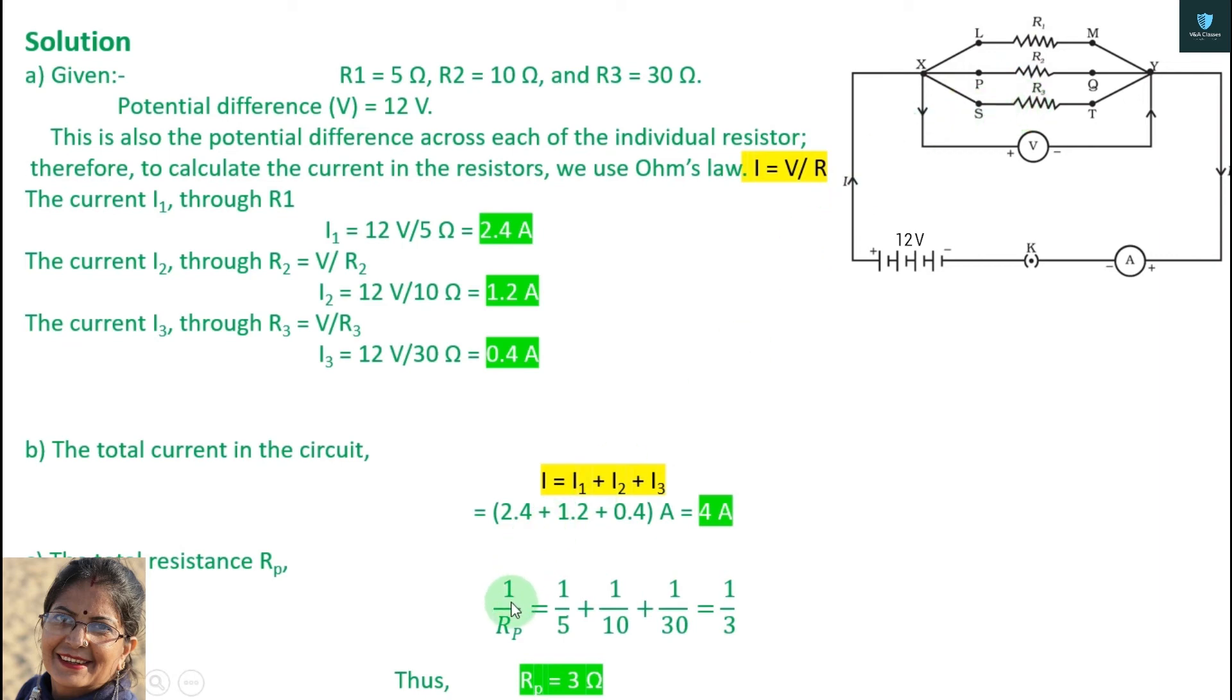We will take the formula for parallel resistors. 1 by r equals to 1 by r1, plus 1 by r2, plus 1 by r3. We will take the formula and then put value. The value of 1 by r1 is 5, then 10, then 30.